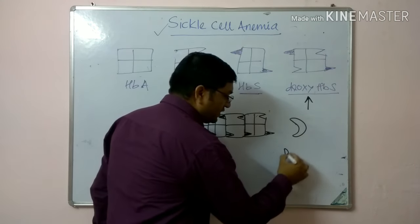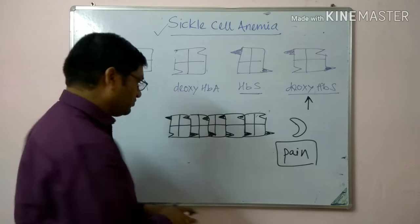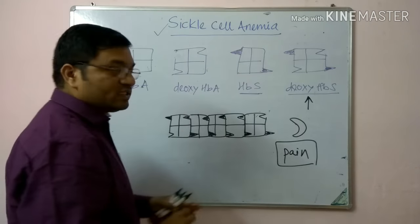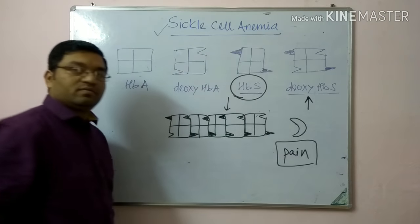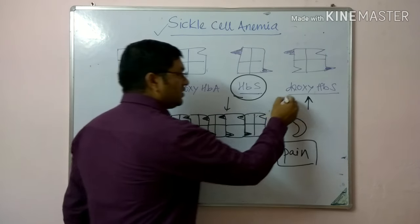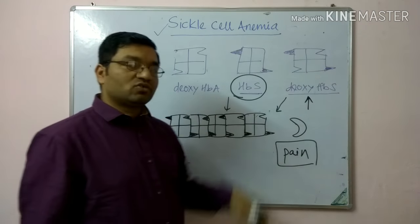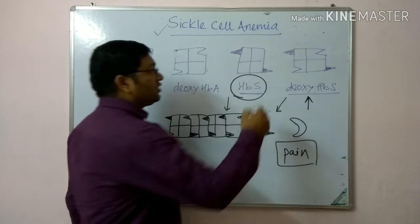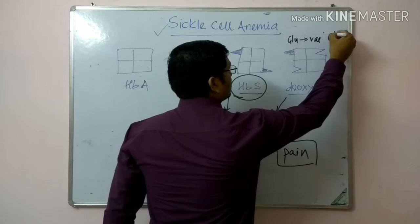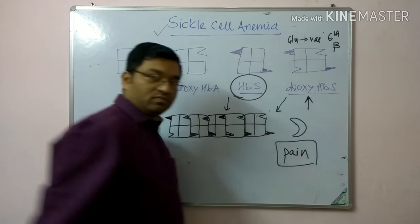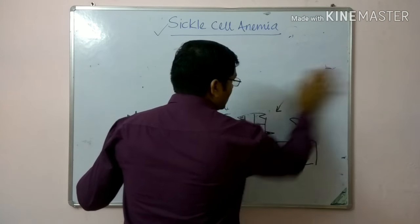These sickle RBCs occlude the microvasculature, leading to blockade and pain — pain is the main symptom in sickle cell anemia. In the oxygenated state, sickling can be prevented. Sickling occurs mainly in the deoxygenated state due to the receptor and sticky patch on deoxy hemoglobin S, caused by the replacement of glutamate by valine at the sixth position of the beta chain.